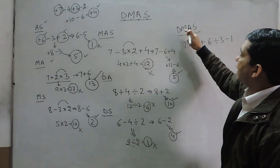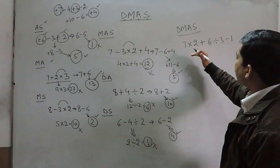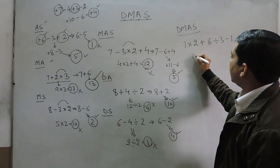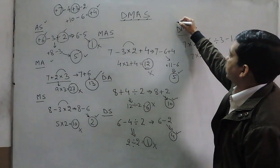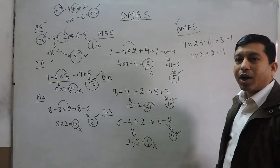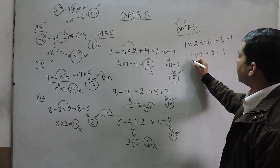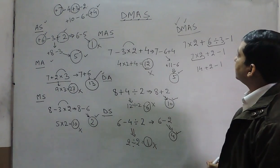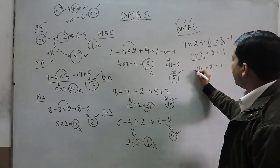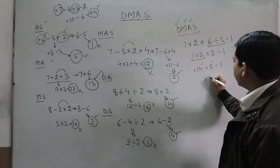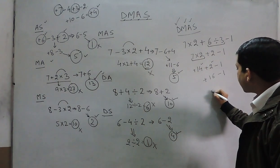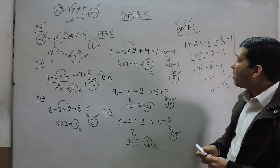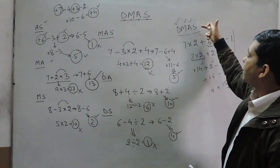Now we take one full DMAS example covering division, multiplication, addition, and subtraction. Students should solve step by step. First, solve division: 6 divided by 3 equals 2, giving 7 times 2 plus 2 minus 1. Second, solve multiplication: 7 times 2 equals 14, giving 14 plus 2 minus 1. Third, solve addition: 14 plus 2 equals 16, giving plus 16 minus 1. Finally, solve subtraction: 16 minus 1 equals 15. So 15 is the correct answer. Students should follow DMAS — division, multiplication, addition, subtraction — step by step.